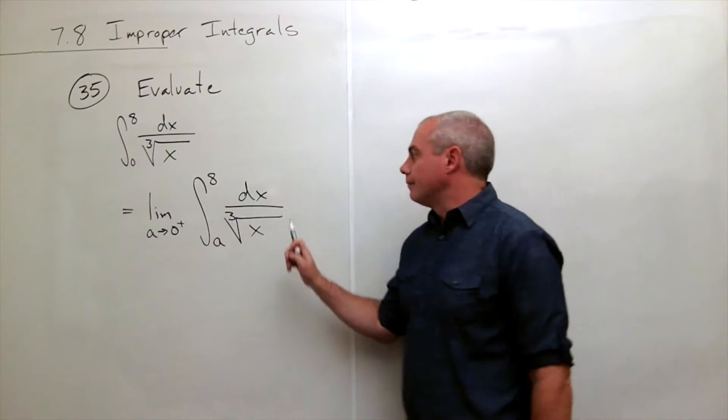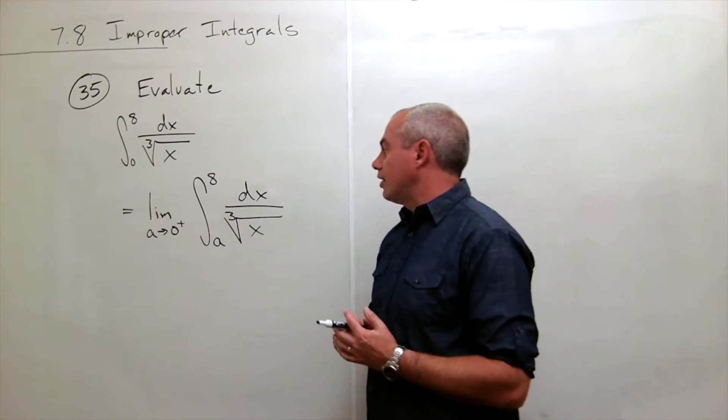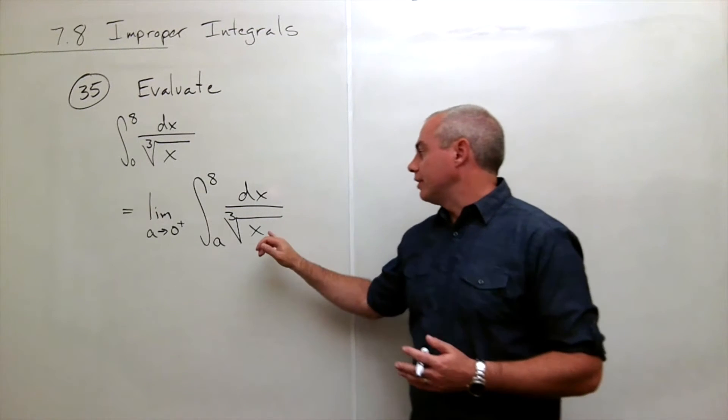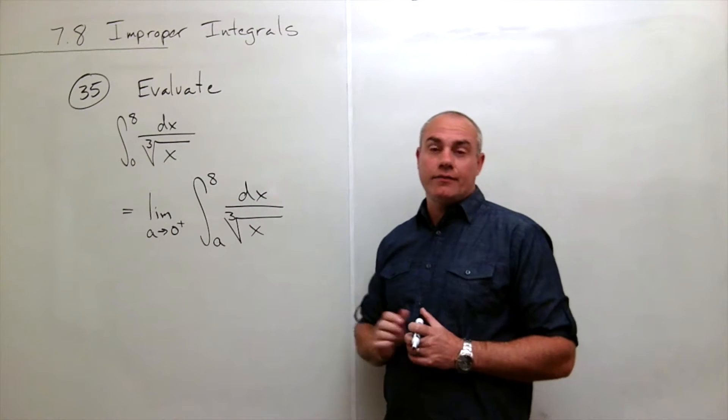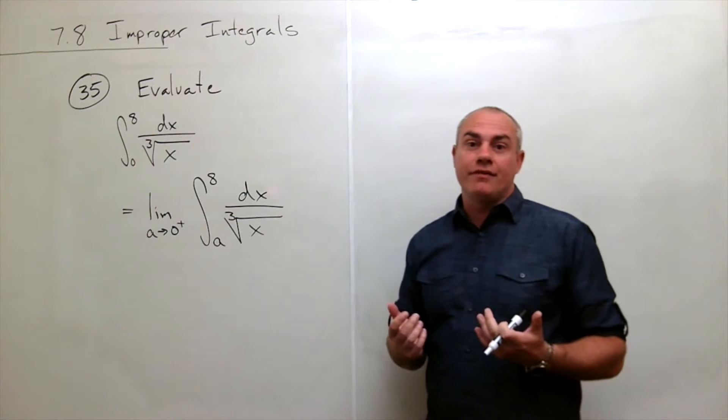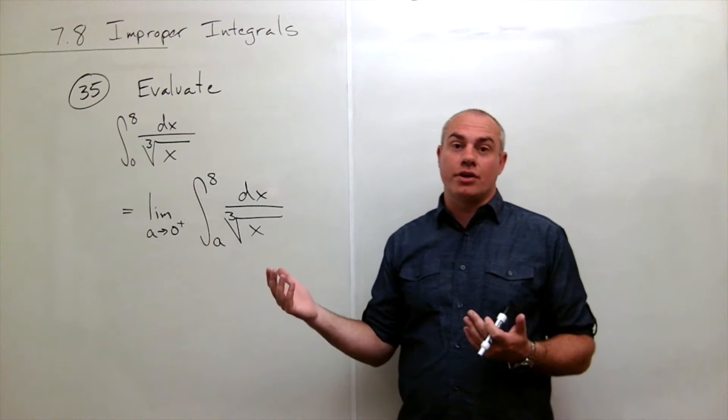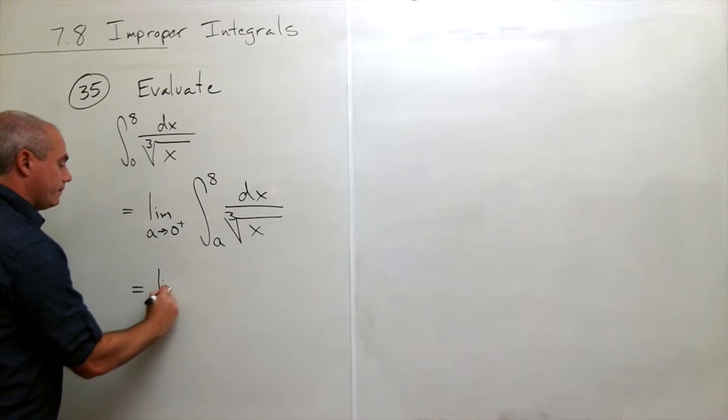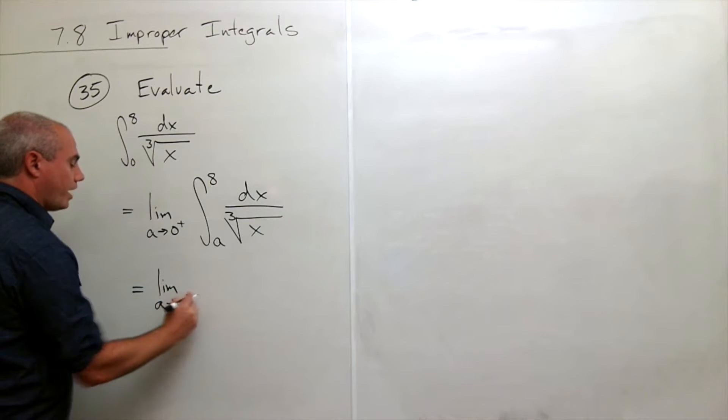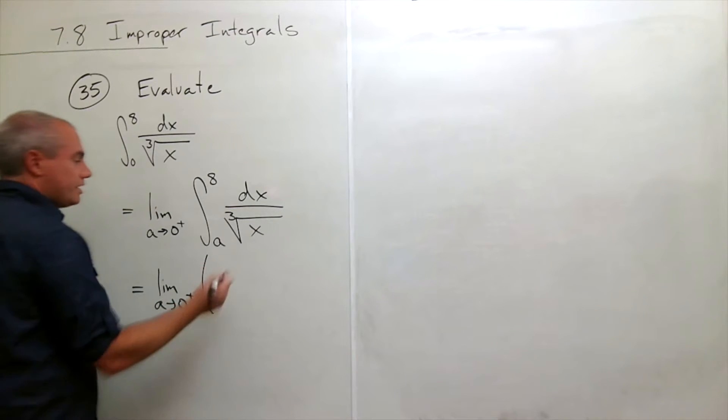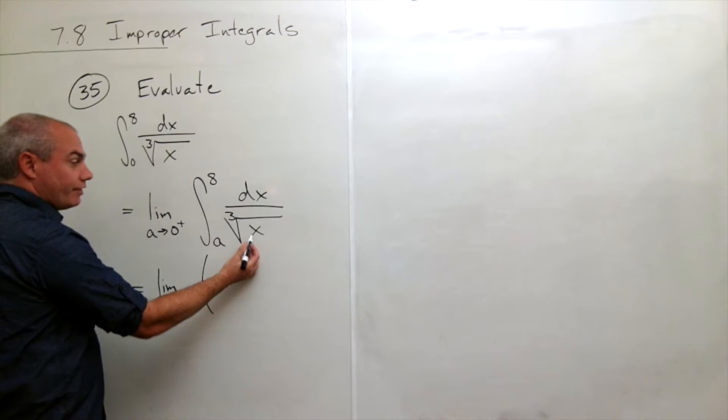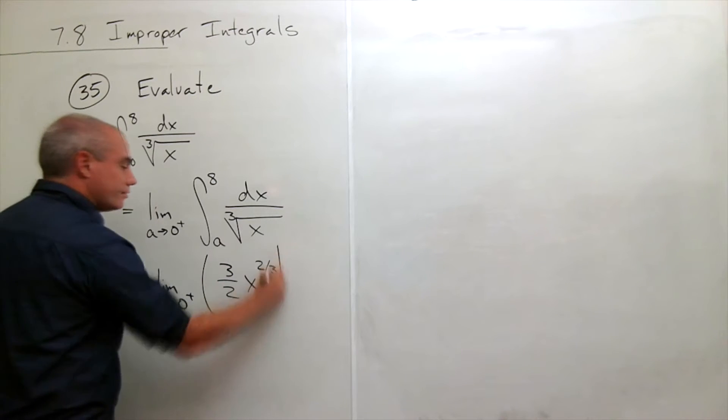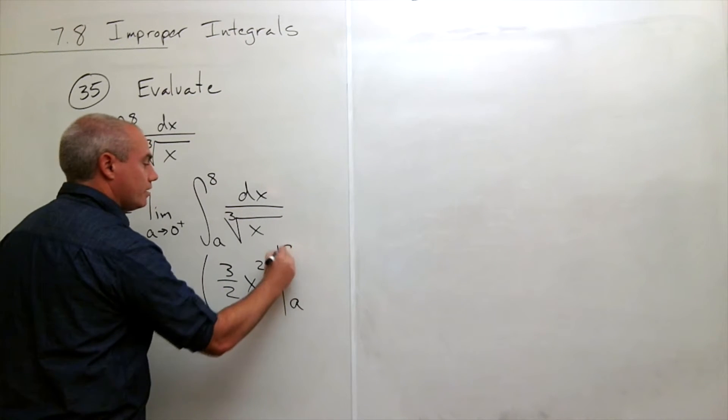Okay, so now that we've got this written as a limit, we're ready to take an anti-derivative. What is the anti-derivative? This is x to the negative one-third. The anti-derivative of x to the negative one-third is x to the two-thirds times three-halves. So let's write that. This is the limit as a goes to 0 from the right of x to the negative one-third and the anti-derivative of x to the negative one-third is x to the two-thirds times 3 over 2 evaluated from a to 8.